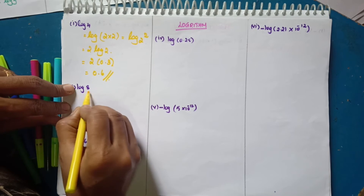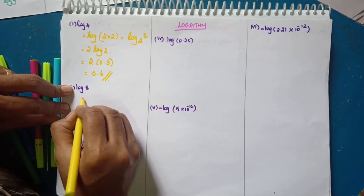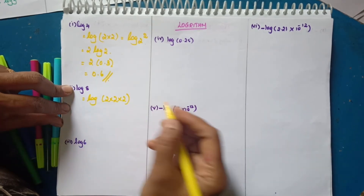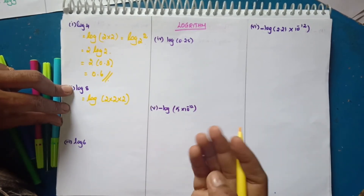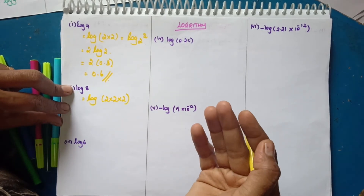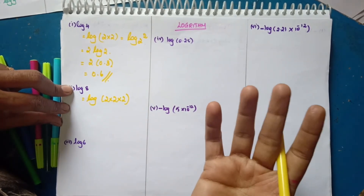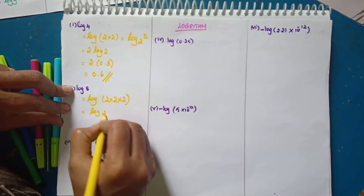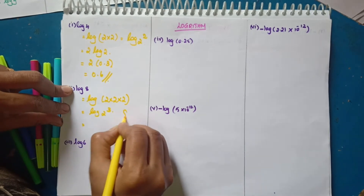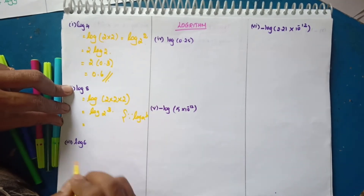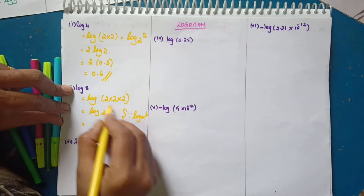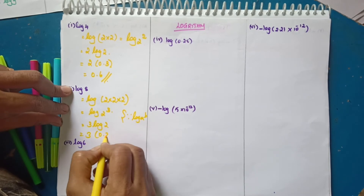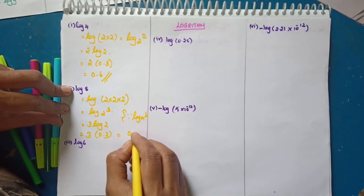Next, log 8. We write log of 2 into 2 into 2, which is log of 2 power 3. Using the formula log of a power b: this is 3 into log 2. That is equal to 3 into 0.3. The answer is 0.9.